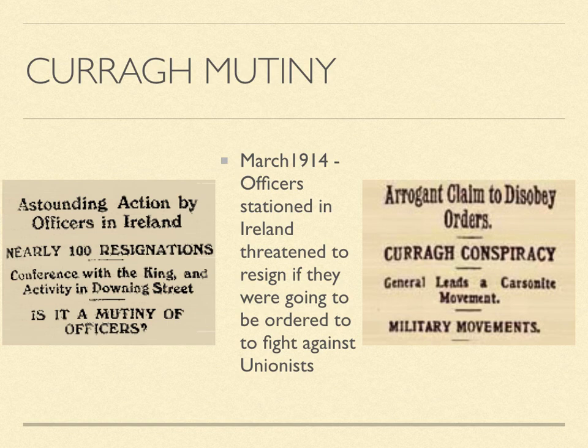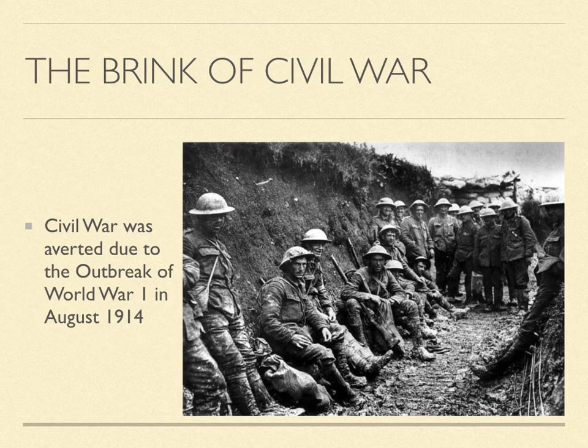The third Home Rule Bill had Ireland and Britain on the verge of civil war. It seemed destined that war would break out, but then something happened that put all internal issues to one side. In August 1914, World War One broke out, and all talk of civil war was put on the back burner until the threat on European soil was resolved.